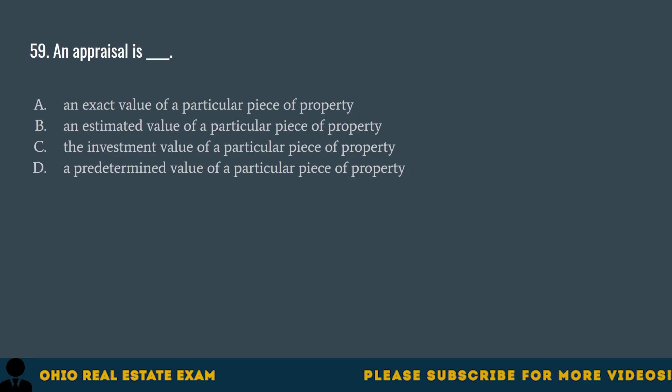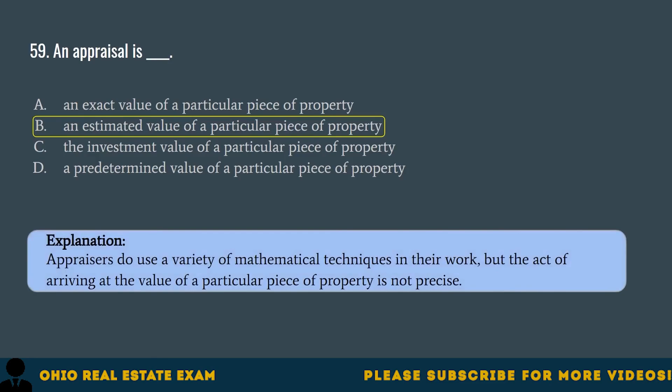Question 59. An appraisal is... A. An exact value of a particular piece of property. B. An estimated value of a particular piece of property. C. The investment value of a particular piece of property. D. A predetermined value of a particular piece of property. The correct answer is B. An estimated value of a particular piece of property. Appraisers use a variety of mathematical techniques, but the act of arriving at the value of a property is not precise.